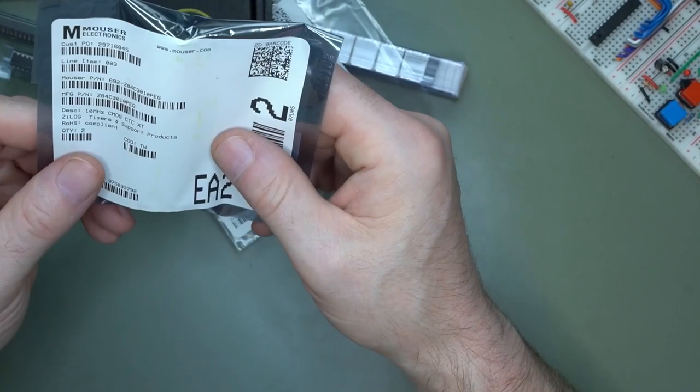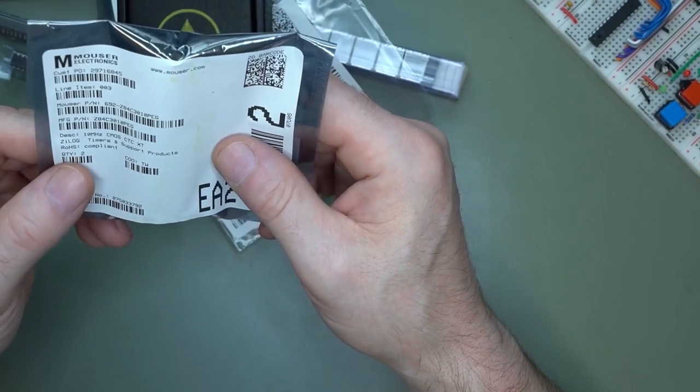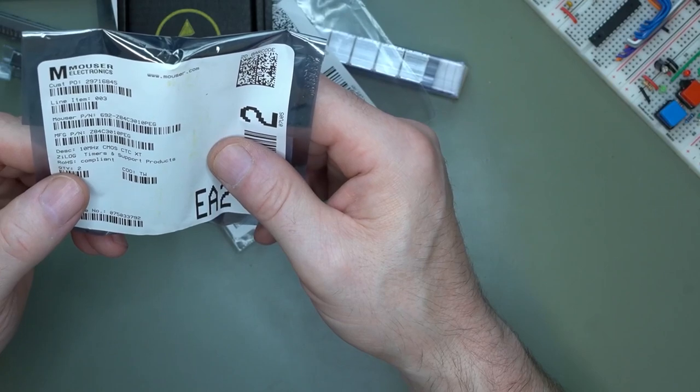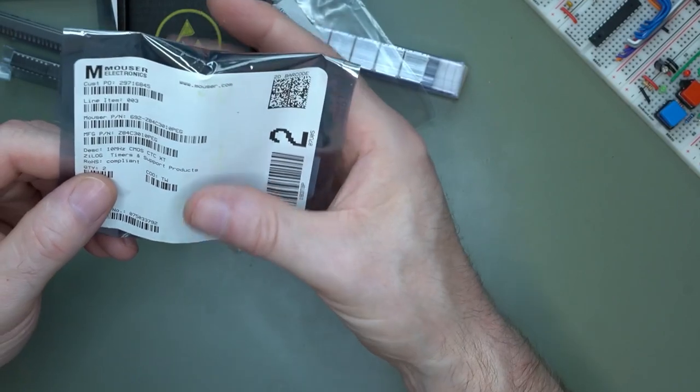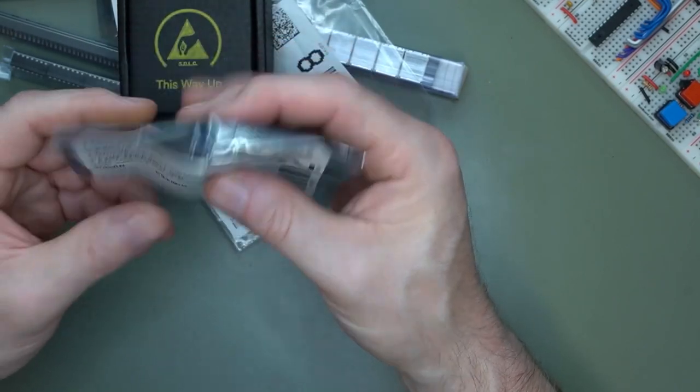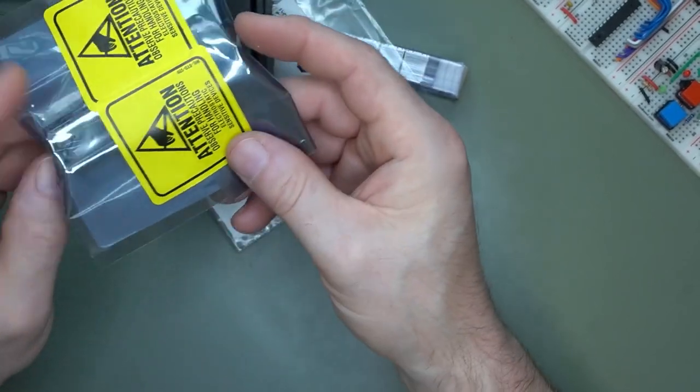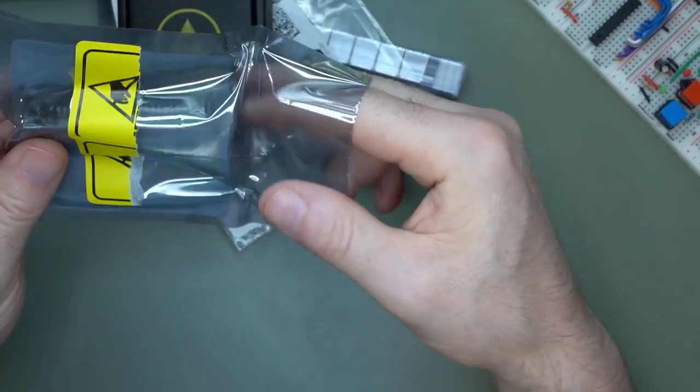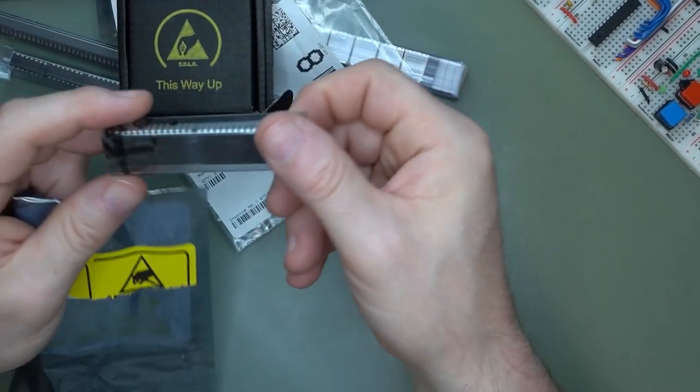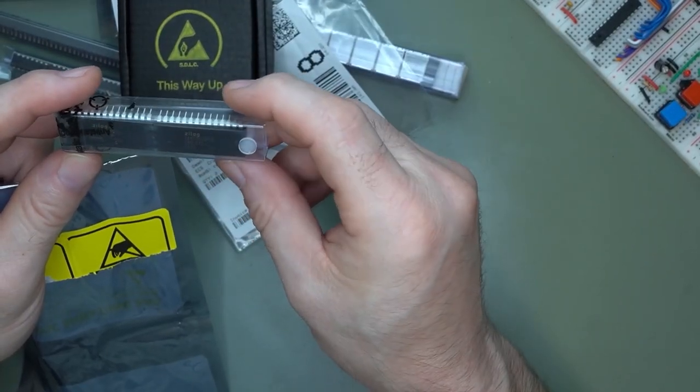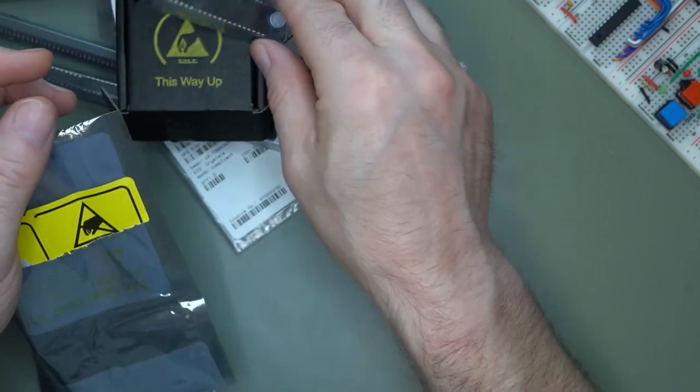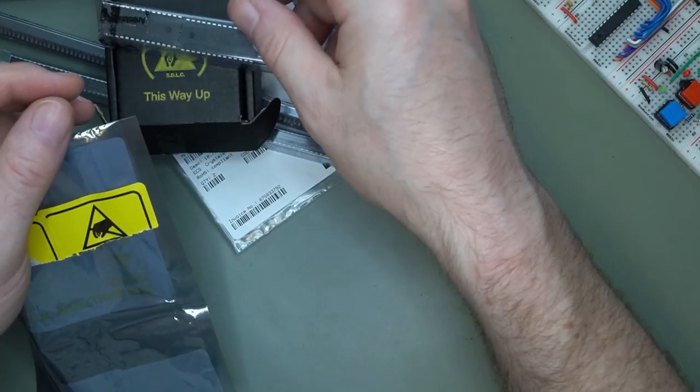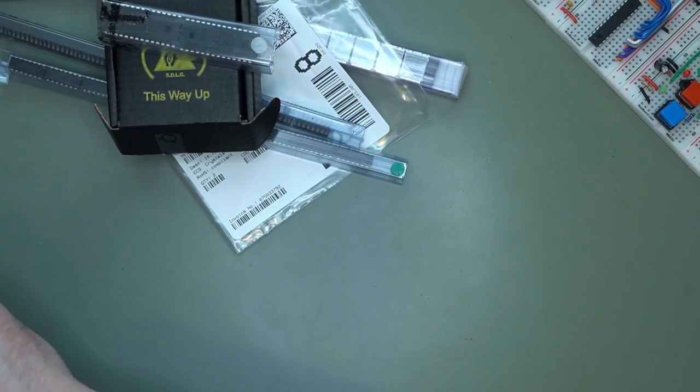And then I have a Z80. Oh yeah, the C30. That's the CTC. I needed a CTC for my next project. So here it is. But yeah, good. I have two. I hate having just one of everything. So at least now I have two. If something happens to it, I am backed up.